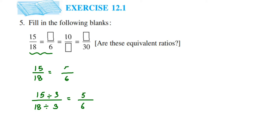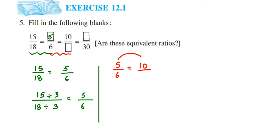So the answer in the first blank is 5. Now for the second blank, we have 5 by 6 equal to 10 by blank. From 5 we got 10, and since 10 is greater than 5, we are multiplying. Multiply 5 by 2 to get 10. We apply the same multiplication to the denominator: 6 times 2 is 12. So the second blank is 12.